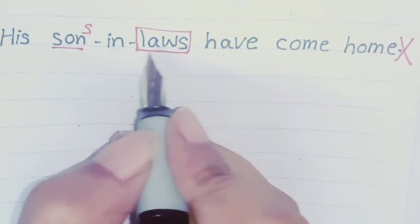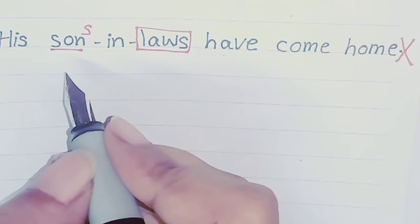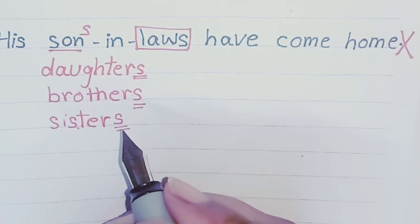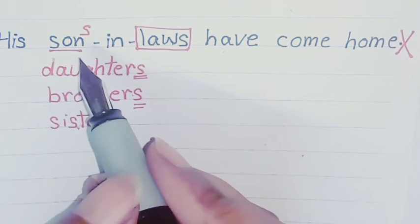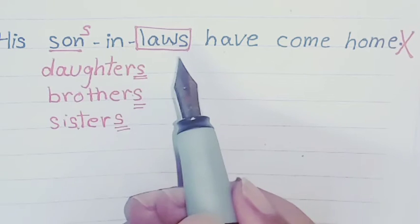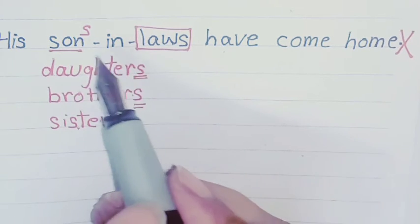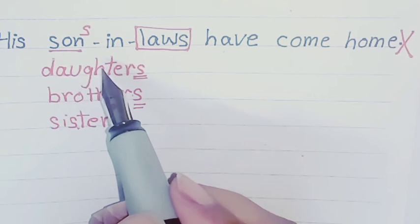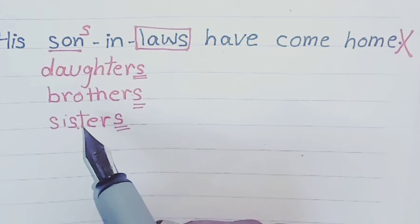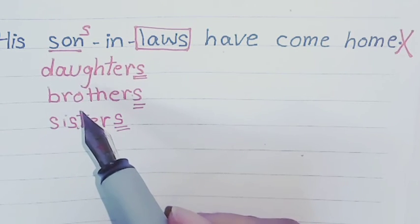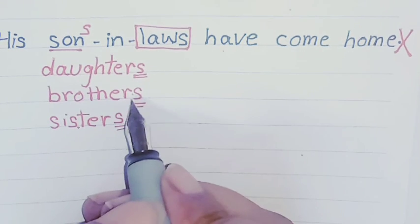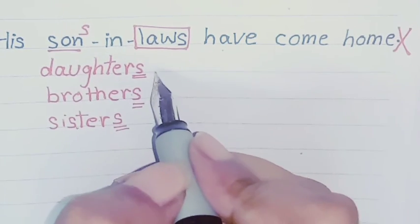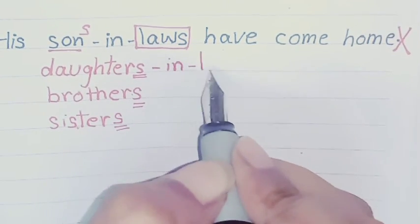To show plural we will add S to son: sons-in-law, daughters-in-law. If there is only one then it's fine, son-in-law, we don't add S. But if we want to show more than one damaad or bahu or brothers-in-law or bahnoyi, then we will add S with the first word, not with law.